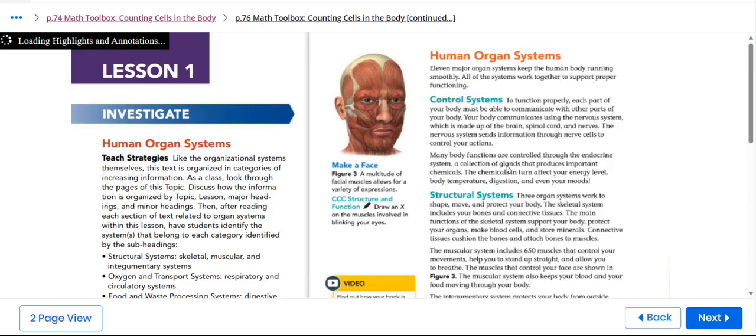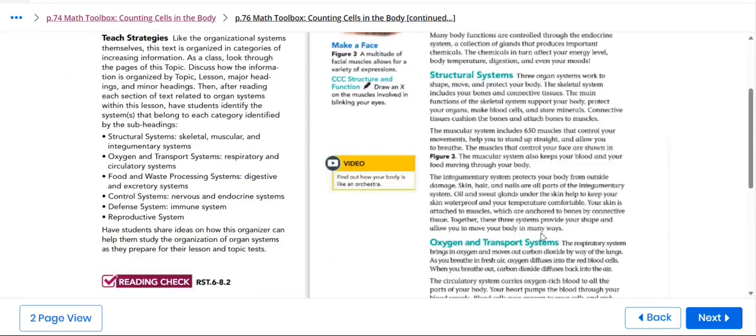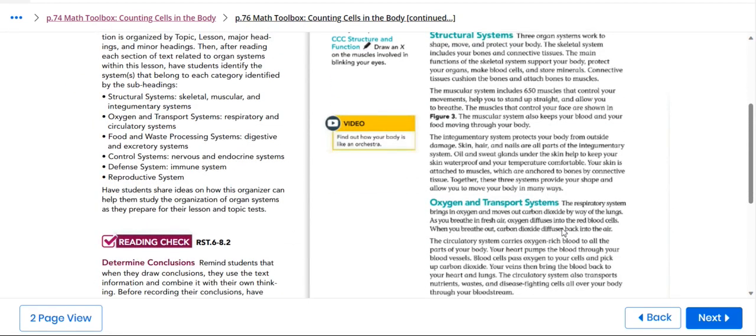We also have here human organ systems. For example, we have the control system which functions properly. The structural system where we have three organ systems that shape, move and protect your body. We also have the oxygen transport system.